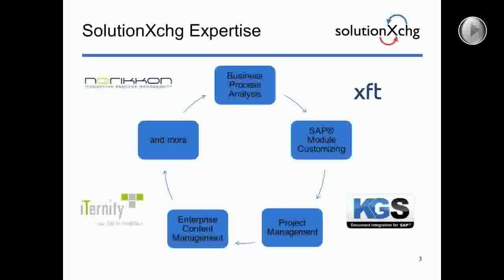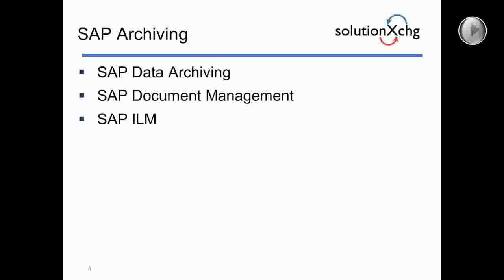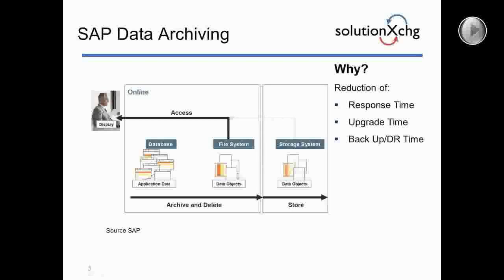Let's talk about what we understand when we talk about SAP archiving. The main components I want to highlight are SAP data archiving, SAP document management, and SAP ILM. There are other functionalities like KPRO or DMS, but those handle ArchiveLink certified storage on a lesser scale. SAP data archiving basically involves taking data out of the SAP database, putting it into a flat file, and storing it first on the file system. Only when you move to the next step — storing on a storage system — do you enter the world of an ArchiveLink-enabled storage solution.